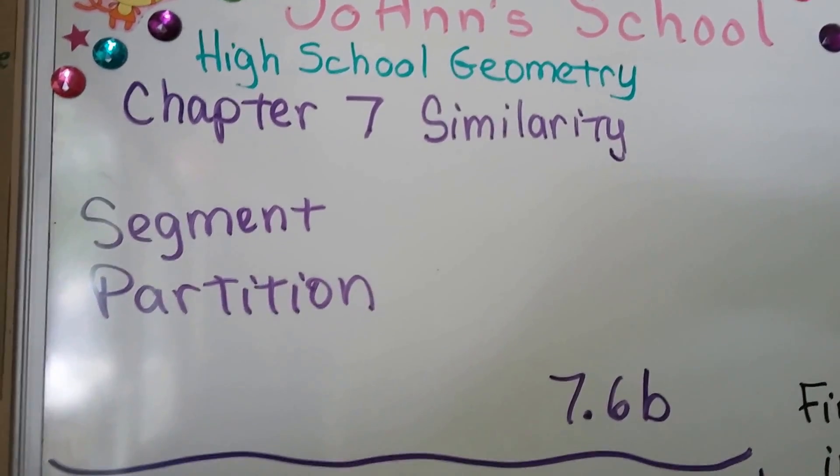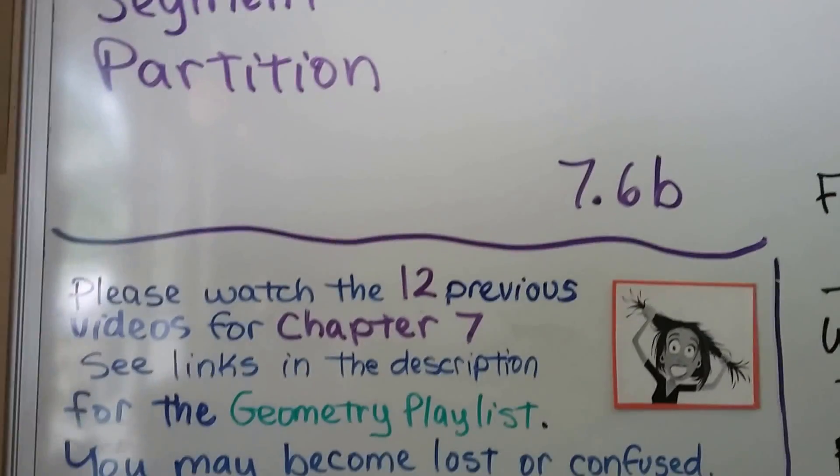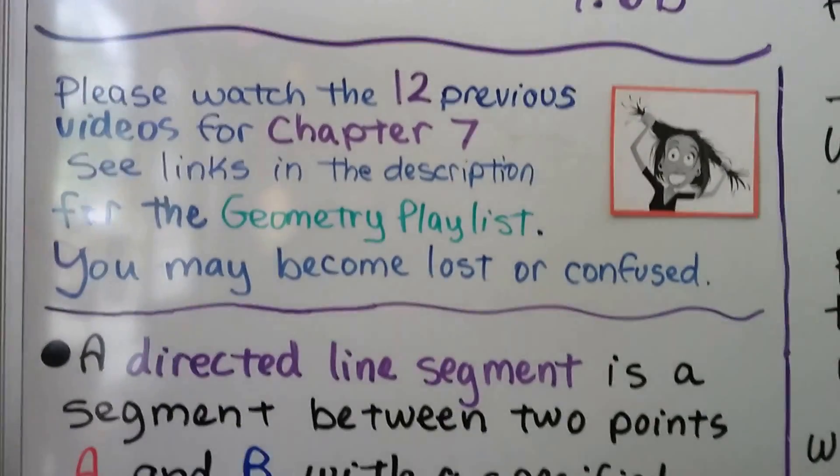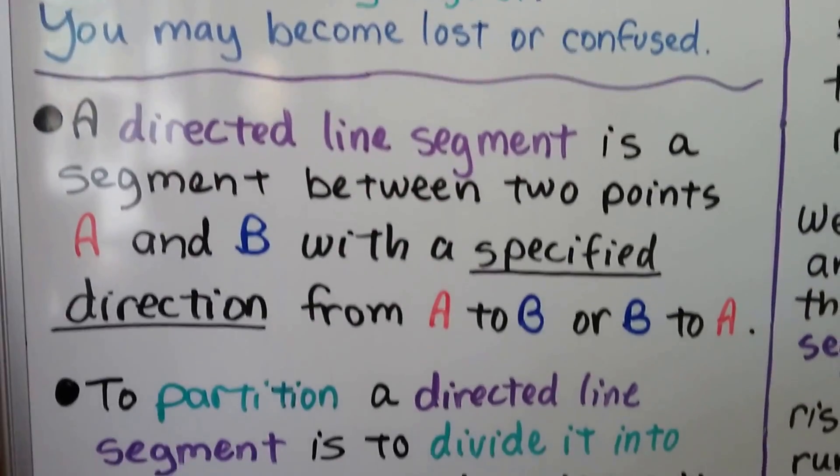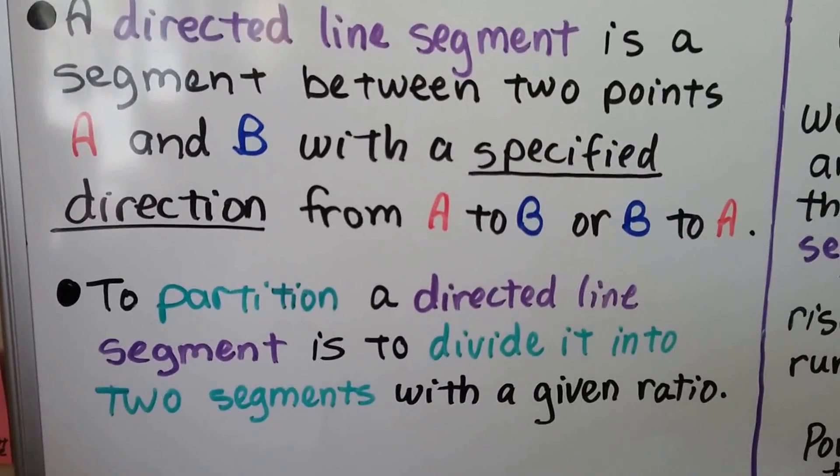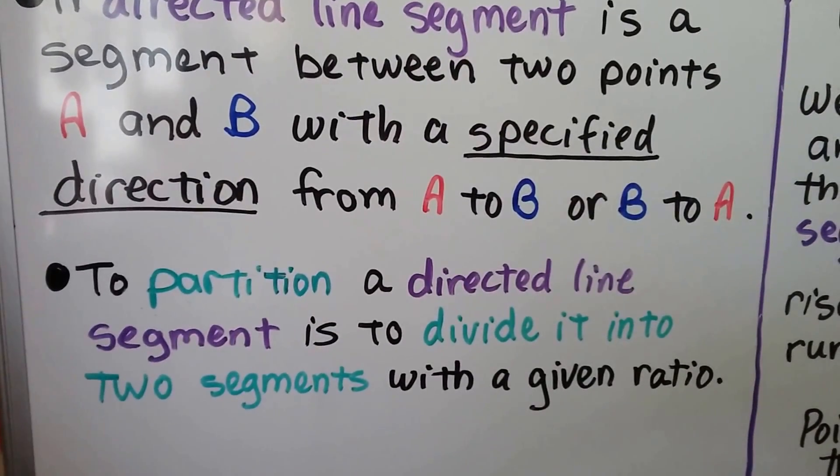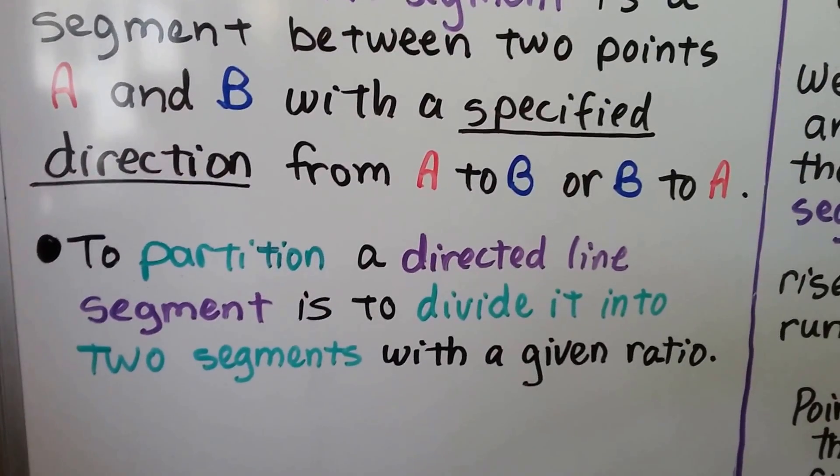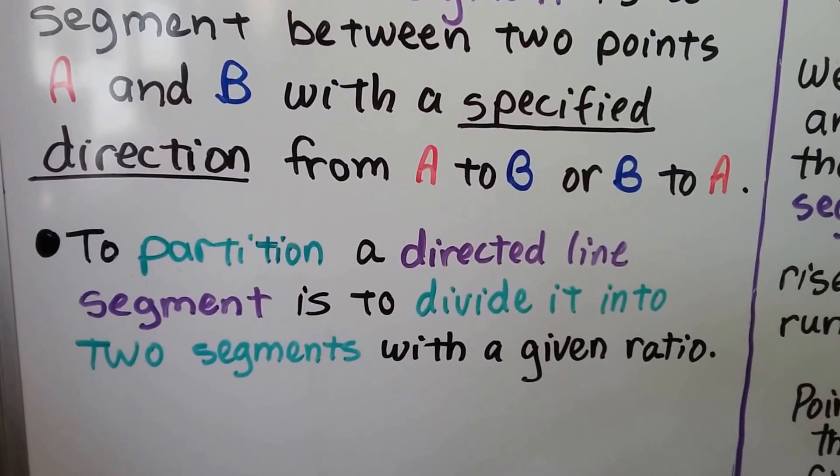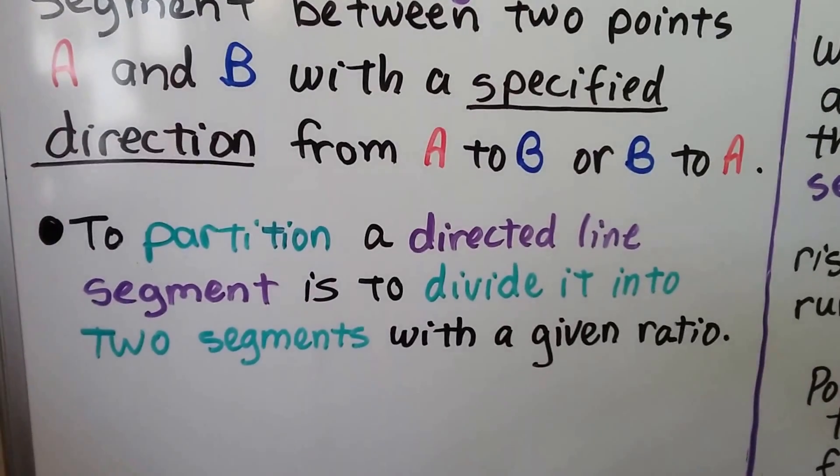Segment Partition 7.6b. We have 12 previous videos for Chapter 7 if you need them in the geometry playlist. A directed line segment is a segment between two points A and B with a specified direction from A to B or B to A. To partition a directed line segment is to divide it into two segments with a given ratio.